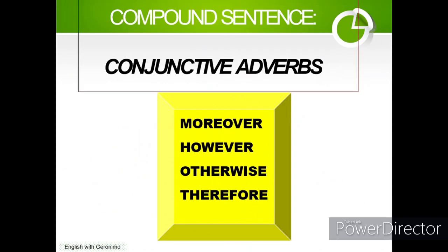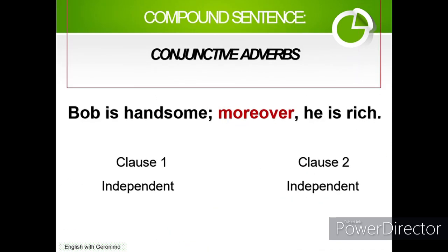In a compound sentence, conjunctive adverbs can also be used — for example: moreover, however, otherwise, therefore. These are some of the most common conjunctive adverbs. For example: 'Bob is handsome; moreover, he is rich.' We have two independent clauses: 'Bob is handsome' is the first, and 'he is rich' is the second independent clause.